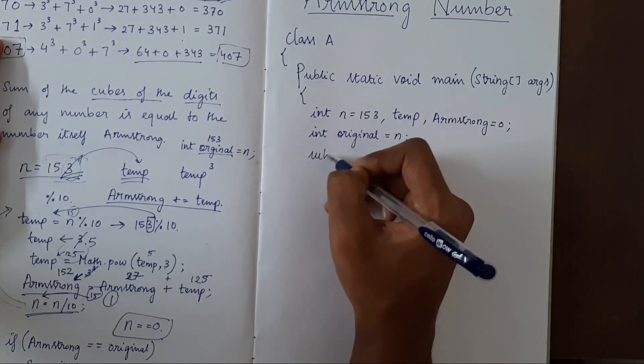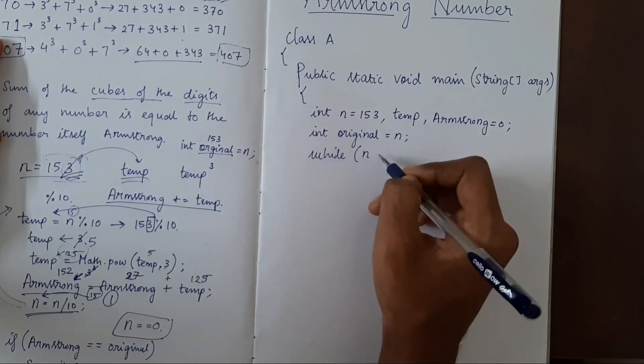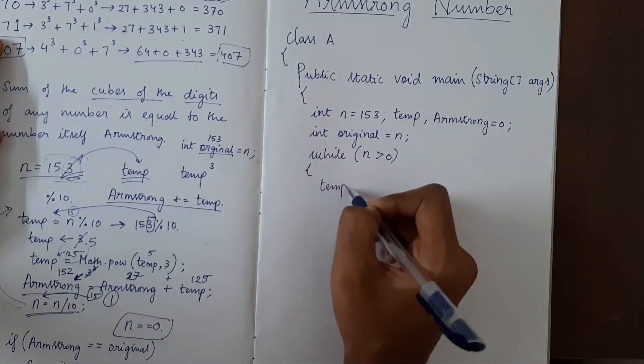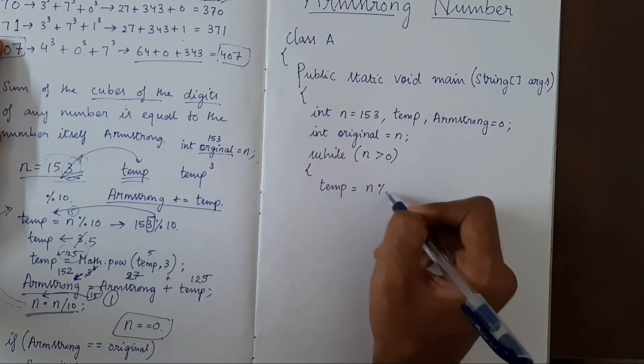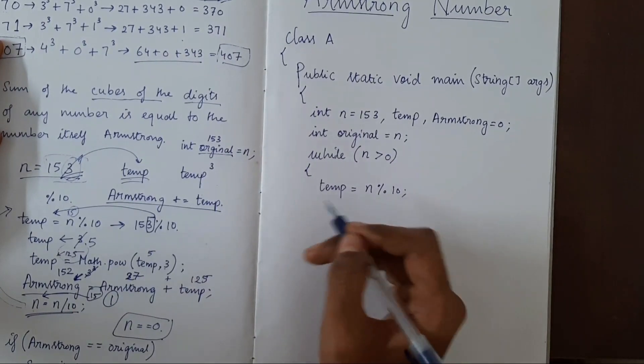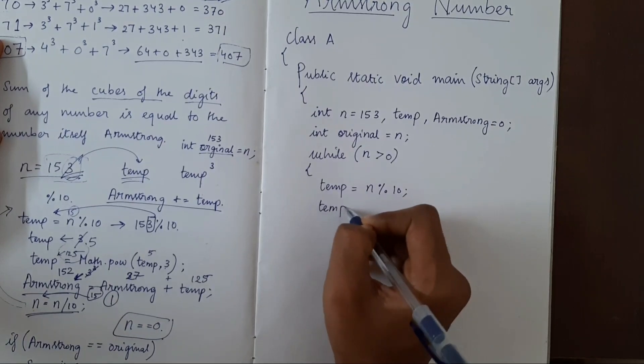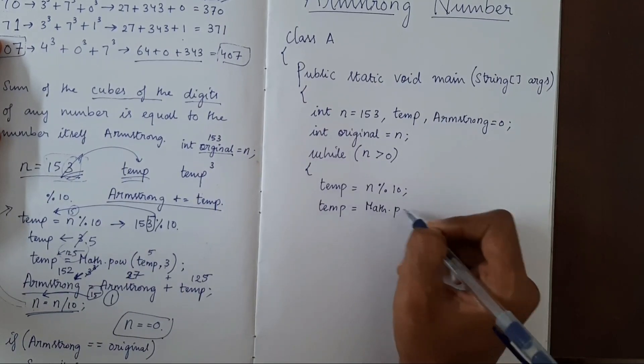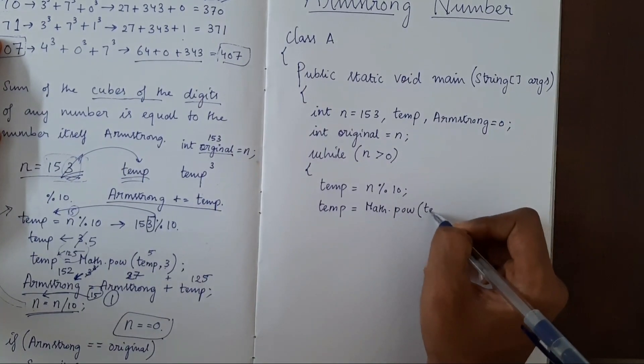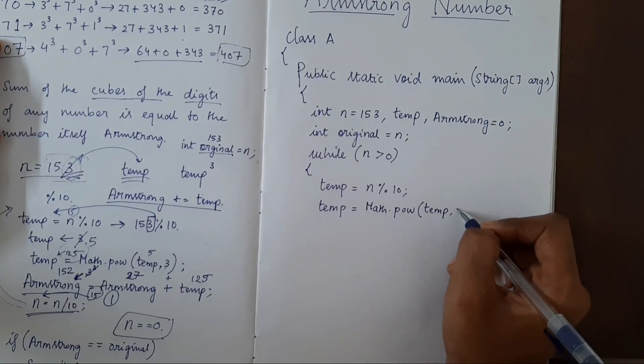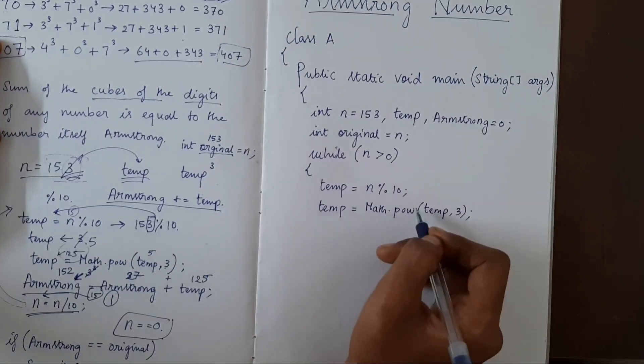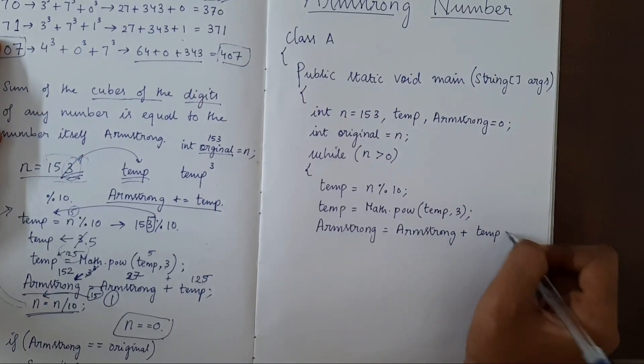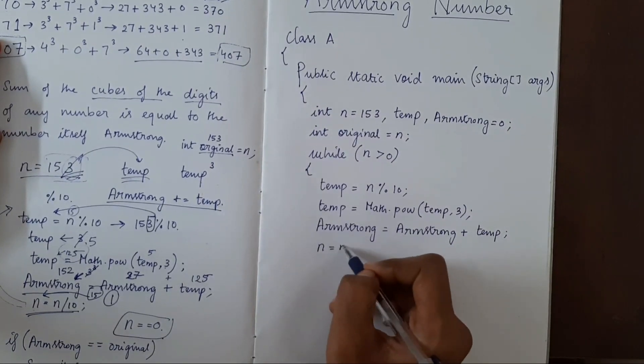Now I'll put all this into code. We'll have while loop, n is greater than 0. We have to remove a digit. So temp equal to n modulus 10. We got last digit. Now we'll cube that number. Math dot pow temp comma 3. Now we have to store this into Armstrong.